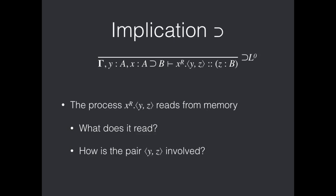We need to think about what it's reading. So, it's reading from X, and X has type A implies B, so that we can think of that maybe as some sort of function. But then we have this pair Y and Z, Y has type A, Z has type B, Y is on the left of the sequent, Z is on the right. That's a little bit strange, so we'll think about how that's involved.